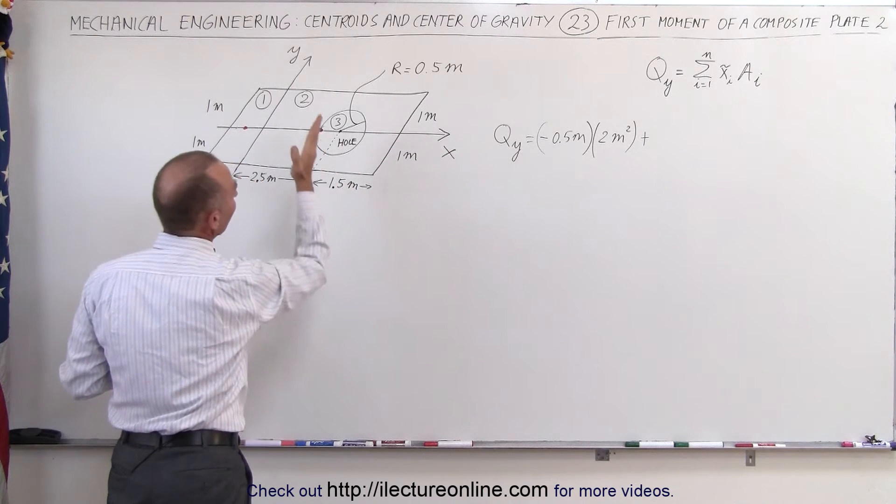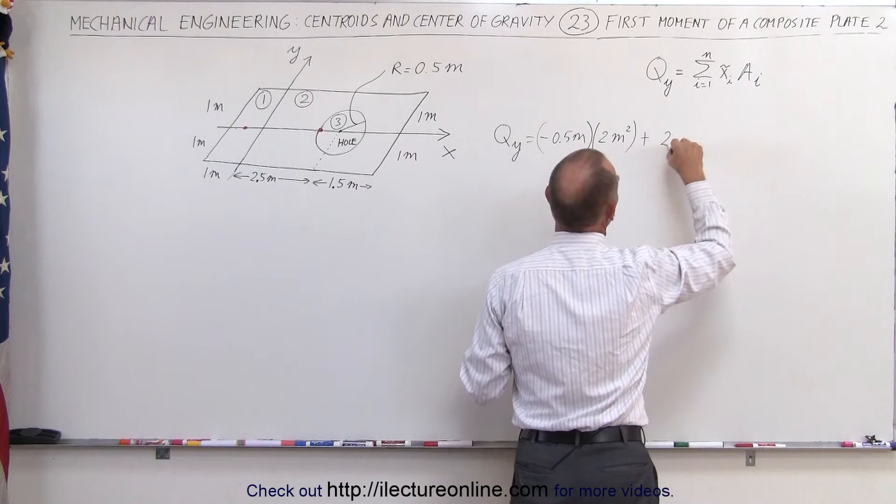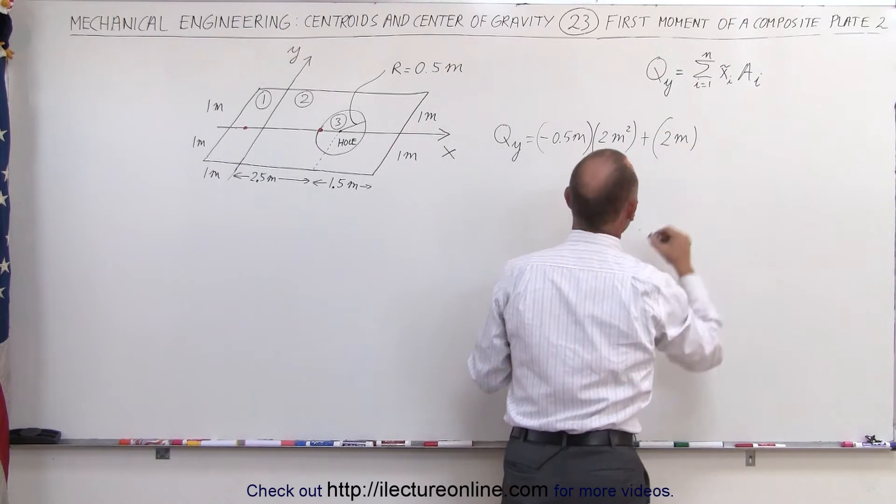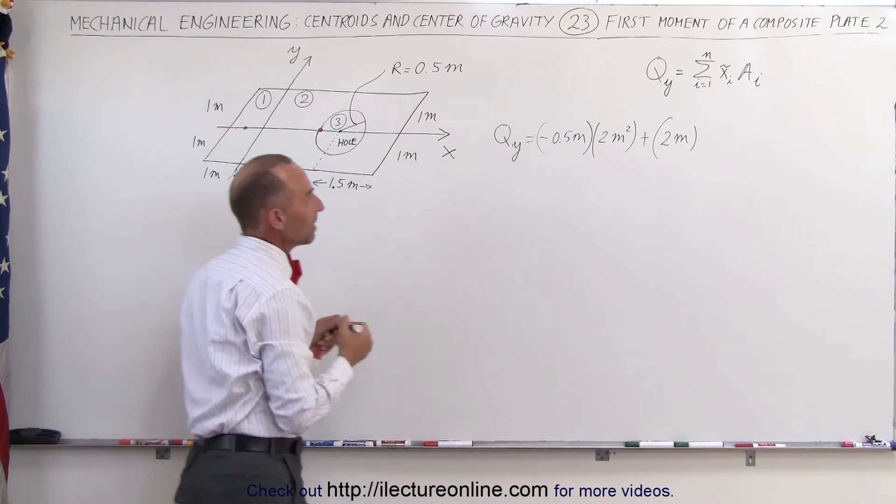It's four meters in length, that places the center mass at two meters times the area of the plate. Area would be four meters times two meters which is eight meters squared.